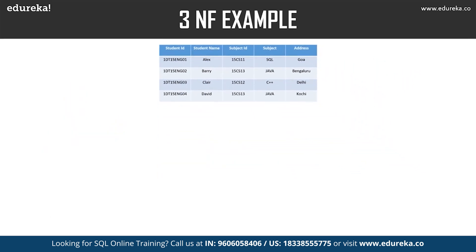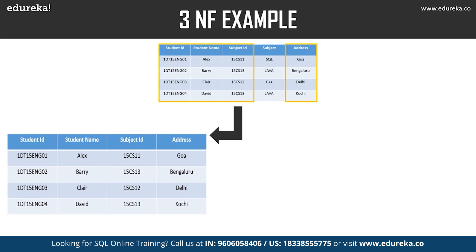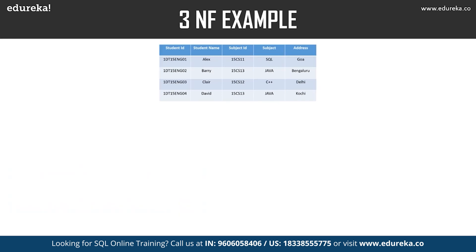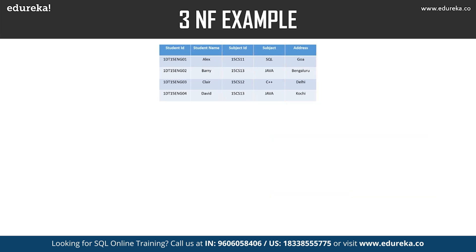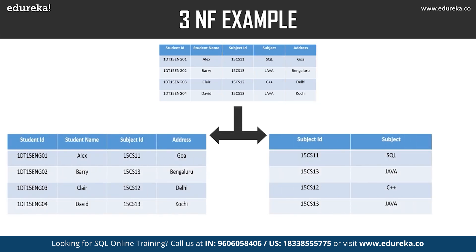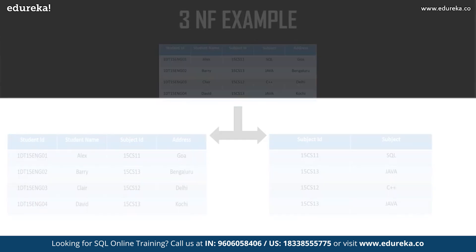To achieve third normal form, we divide the table: the first table stores student ID, student name, subject ID, and address — all columns refer to the primary key, student ID. The second table has subject ID and subject, where subject is dependent only on subject ID and not on student ID. All non-key attributes are now fully functionally dependent on the primary key of their respective tables.